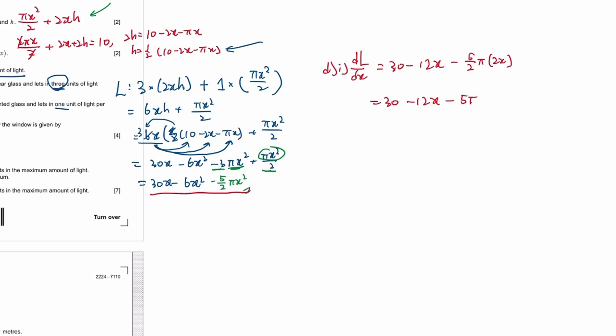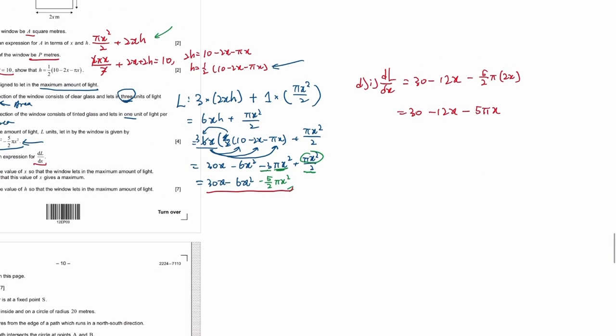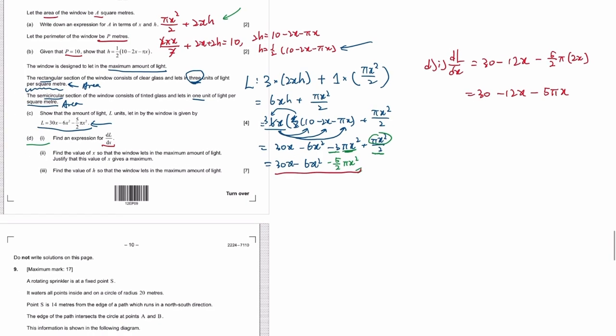Plus 5πx. Put in the fabric so that the window laying maximum amount of light. Justify that it is a maximum.